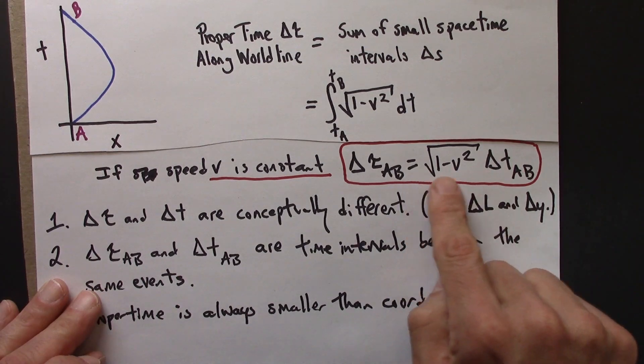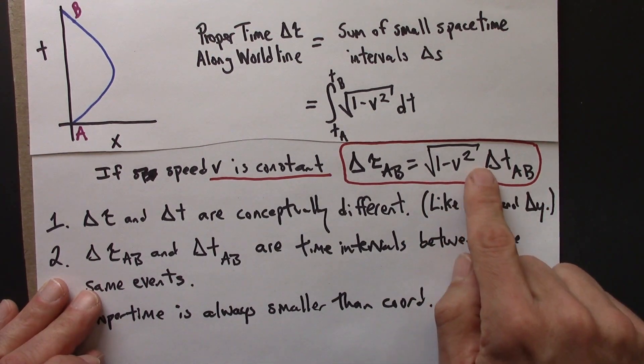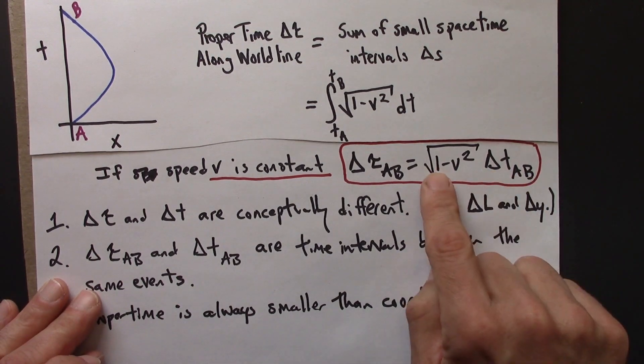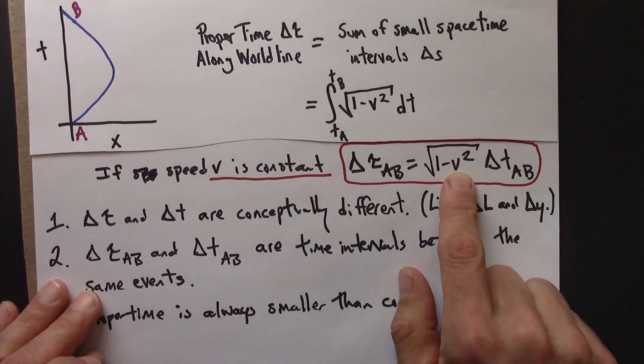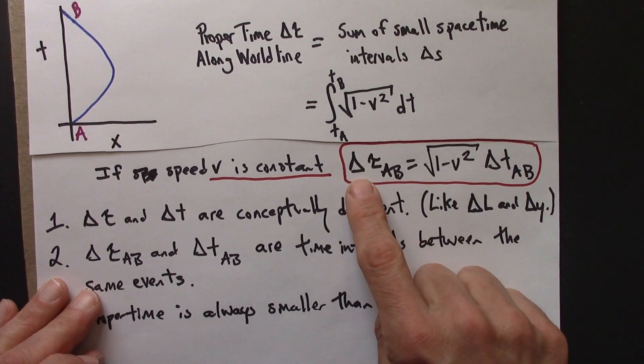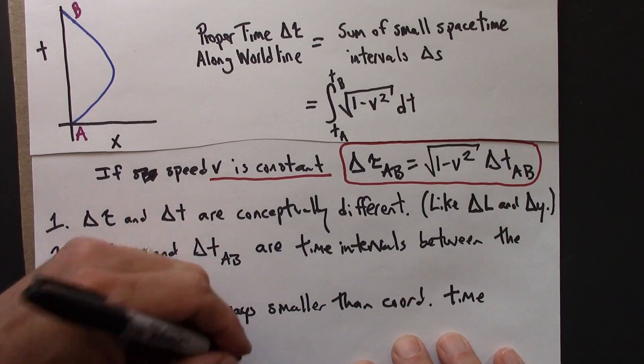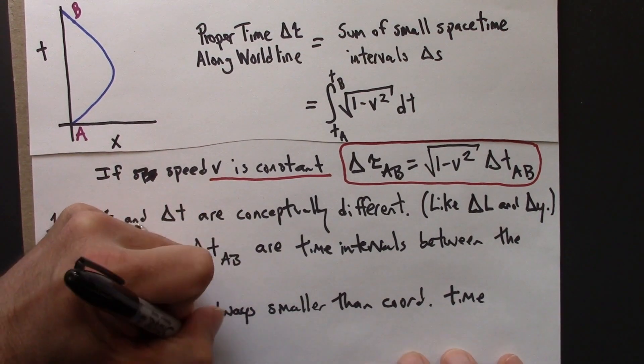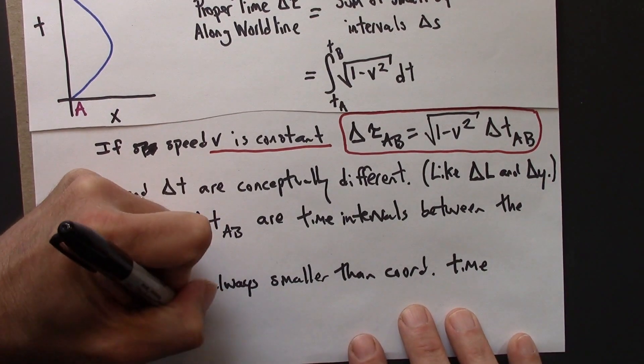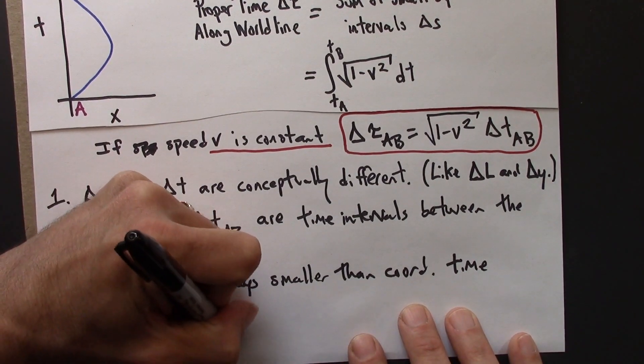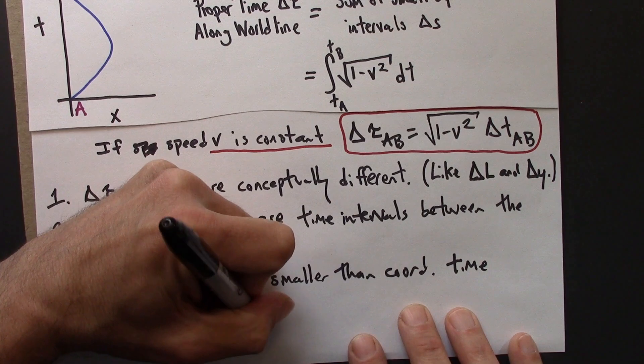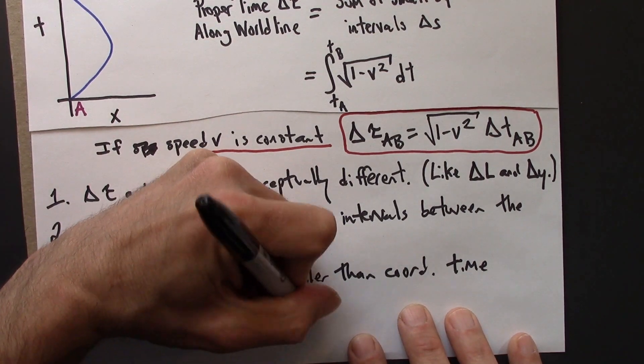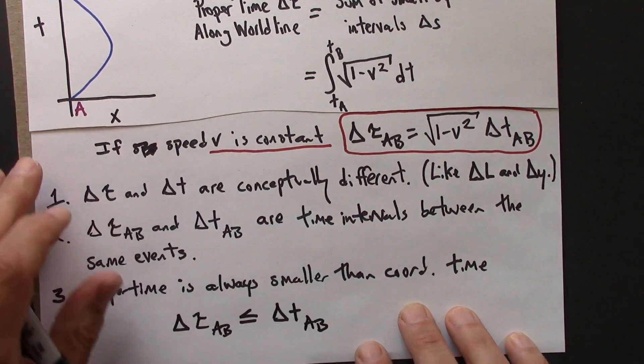And so this is 1 minus something less than 1. Square root, again, this is a number less than 1. So we're going to have delta t multiplied by a number less than 1, between 0 and 1. And that's going to make delta tau smaller. I could write that in math as well as in words. Delta tau AB is less than delta t AB.